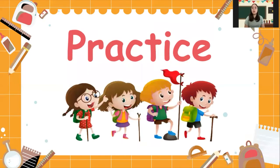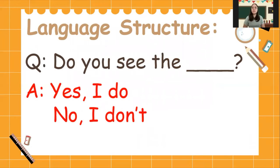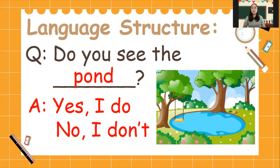So now, let us have a practice. For our language structure, we have a question: Do you see the blank? The answers are: Yes, I do. And no, I don't. For example: Do you see the pond? Yes, I do. No, I don't. Do you see the hill? Yes, I do. No, I don't.